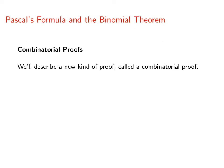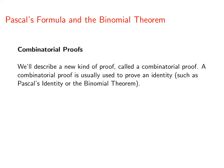Hello, discrete math fans. Today we're going to talk about a new kind of proof. These are called combinatorial proofs. A combinatorial proof is usually used to prove an identity, and we've seen a couple of these, like Pascal's identity or the binomial theorem.